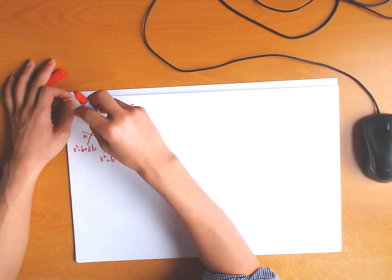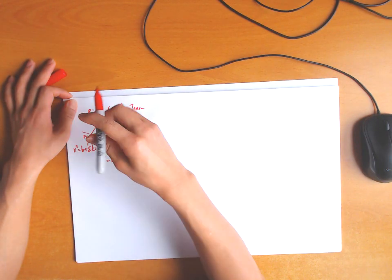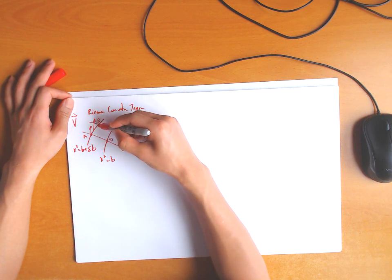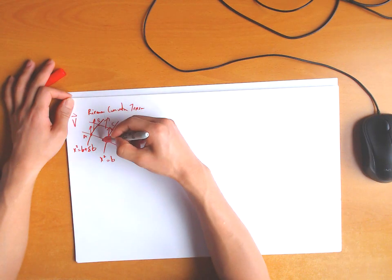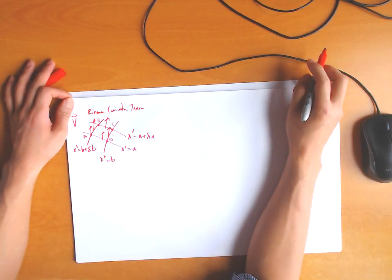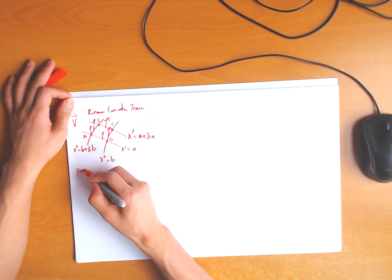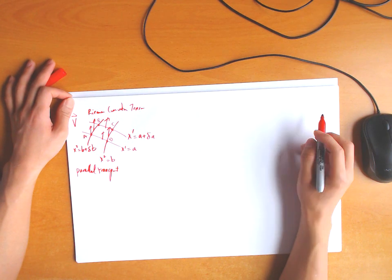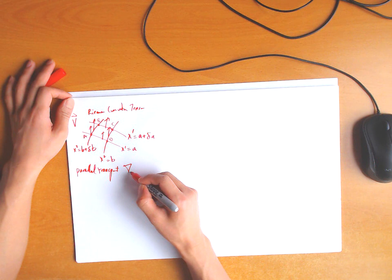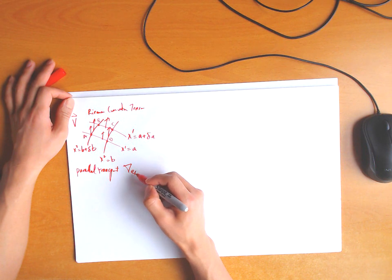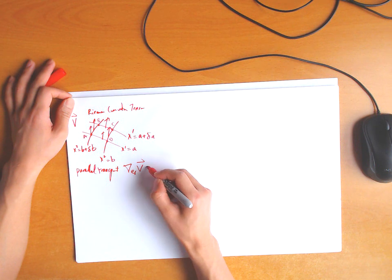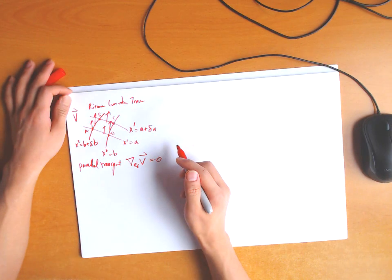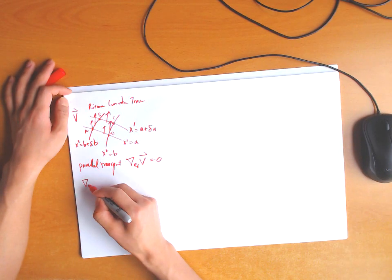What we're going to do is parallel transport a vector along this grid. Suppose we have some vector v — it's been parallel transported from a to b to c to d and all the way back to a. This is known as parallel transport. By definition, parallel transport is a covariant differentiation with respect to the vector v along v — the covariant differential of v along v equals zero.